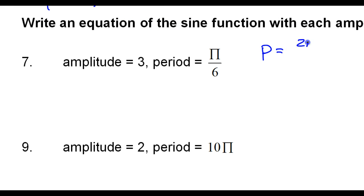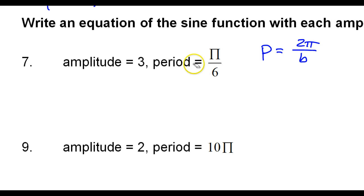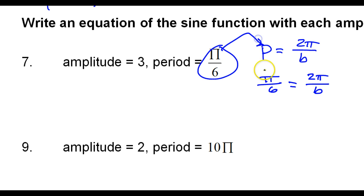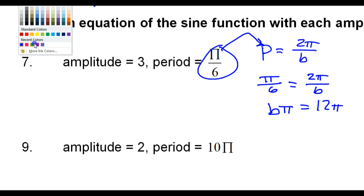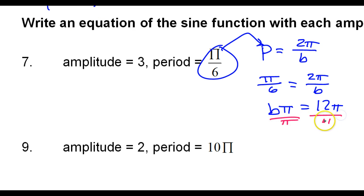So if the period is 2 pi over b, and in this case the period is pi over 6, that means pi over 6 is equal to 2 pi over b. I just need to solve this for b. One way is to cross multiply. So doing the diagonals: that's going to be b times pi, and the other diagonal gives 12 pi. If I divide both sides by pi, the pi's cancel out, so b is 12.